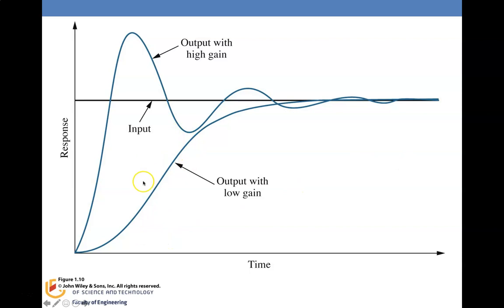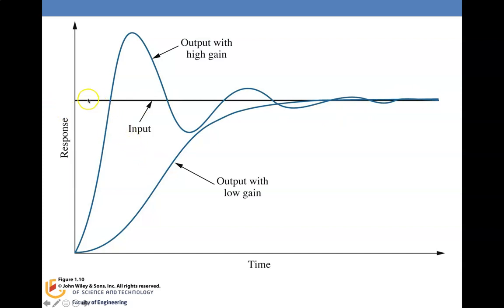This diagram shows a straight line representing the desired output. You can have an output with a low gain that comes very sluggishly and then achieves the desired output, or an output with a high gain that overshoots, then undershoots — what we call overshoot — and eventually settles down. The job of the control system is to determine how to achieve the desired output, and these are two different ways with low gain and high gain.